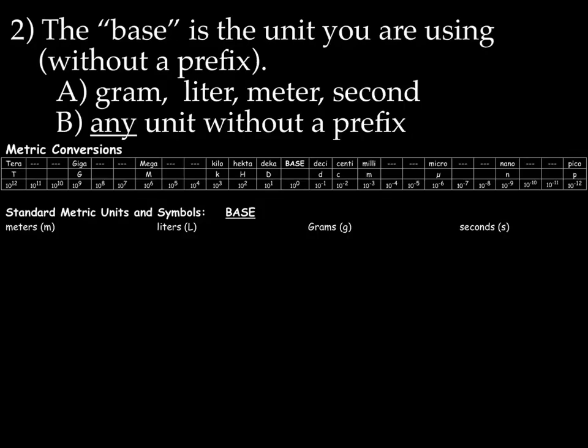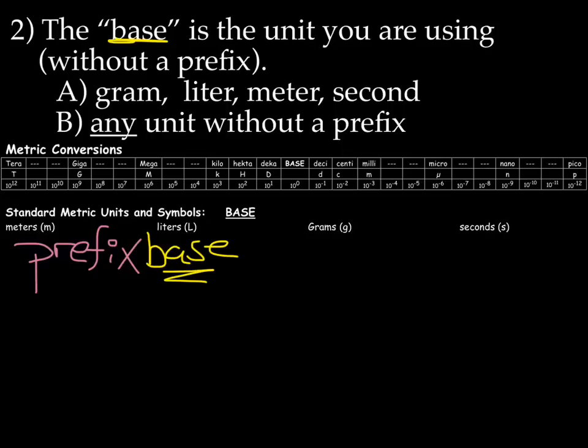Let's take a moment to talk about how the metric conversion table is set up. Metric units come in two parts. You've got a prefix, which is written before. And you have a base. So let's start with the second part, the base. The base is the unit you're using without a prefix. Examples that we use a lot in chemistry are gram, liter, meter, second.